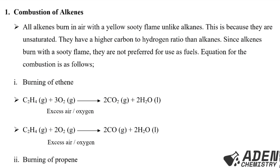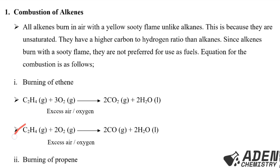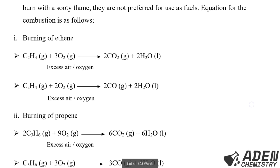The equation for combustion of ethene: C₂H₄ (gas) reacts with 3 moles of oxygen gas. In excess air or excess oxygen, we get 2 moles of carbon dioxide and 2 moles of water or steam. When ethene reacts with a limited supply of oxygen, we get carbon monoxide and water as products.